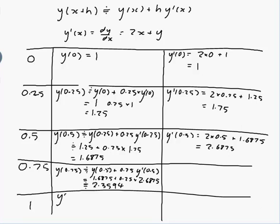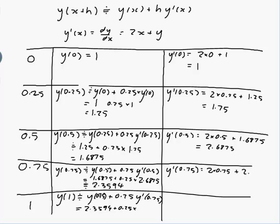And finally, y of 1 would be approximately equal to y of the previous step, 0.75, plus 0.25 times y dashed of 0.75. So that's 2.3594, plus 0.25 times, I haven't figured out y dashed of 0.75 yet, so y dashed of 0.75 would be 2 times x, which is 0.75, plus y, which was 2.3594, and that works out to be approximately 3.8594. And so 3.8594 there, and my answer is approximately equal to 3.3242.